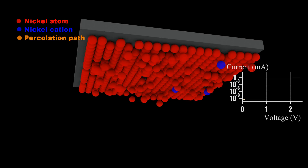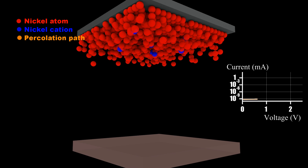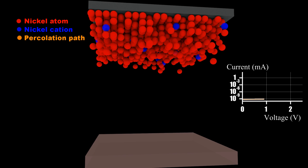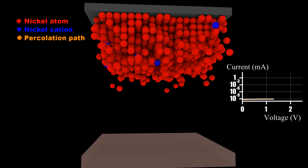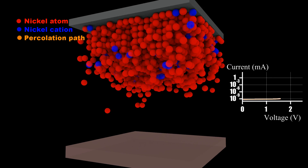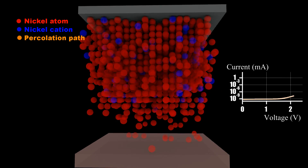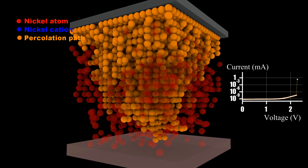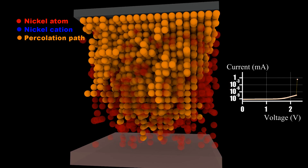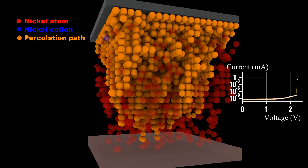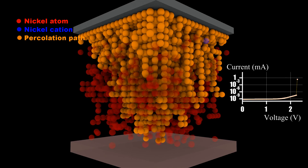The cations are formed at the active electrode-dielectric interface. The cations drift in the dielectric by means of the electric field. They are reduced when they get in touch with the inert electrode, forming clusters that form a percolation path. The forming process is over when the percolation path connects both electrodes.